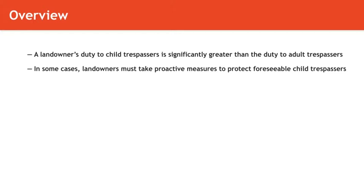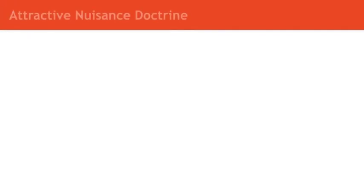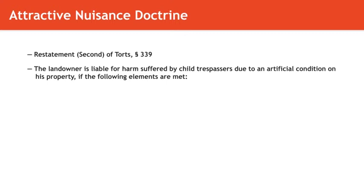The landowner's special different duties to child trespassers are bound up in what is called the attractive nuisance doctrine. The attractive nuisance doctrine can be found in the Second Restatement of Torts, Section 339. Summarizing and condensing it here, it essentially says that the landowner or rightful possessor of land is liable for harm suffered by child trespassers due to an artificial — not natural — condition on his property if the following elements are met.